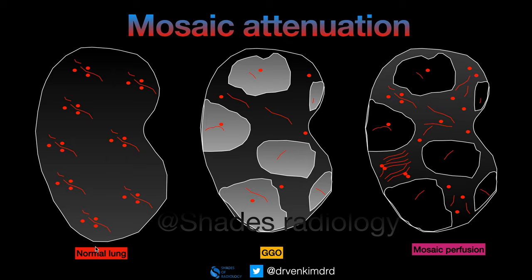This is a normal lung illustrated with normal vascular markings throughout. In the second image, there are a few increased areas of attenuation in the lung, but the vessel density is almost the same in both the lucent areas and the areas of increased attenuation. So this is ground-glass opacity — you are seeing the vessels through an opacified or increased attenuated lung. This is typically seen in COVID-19.